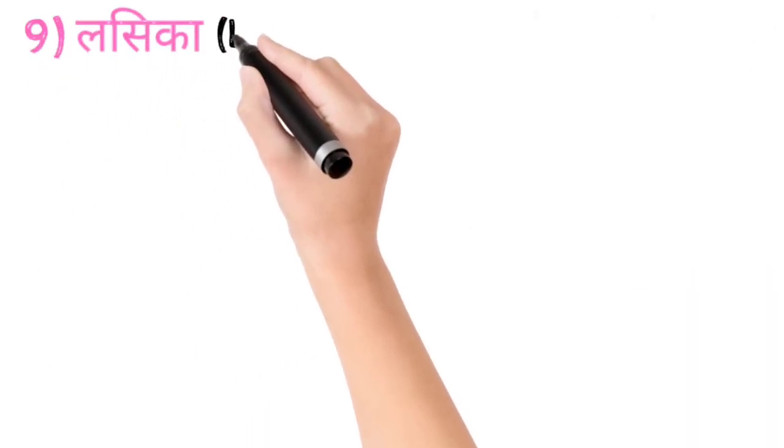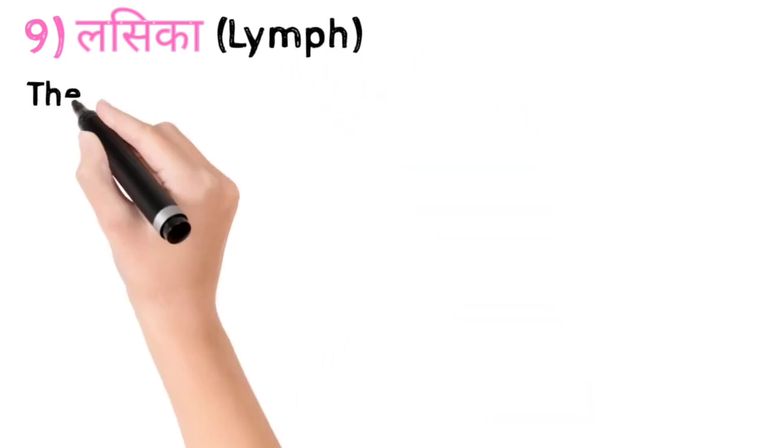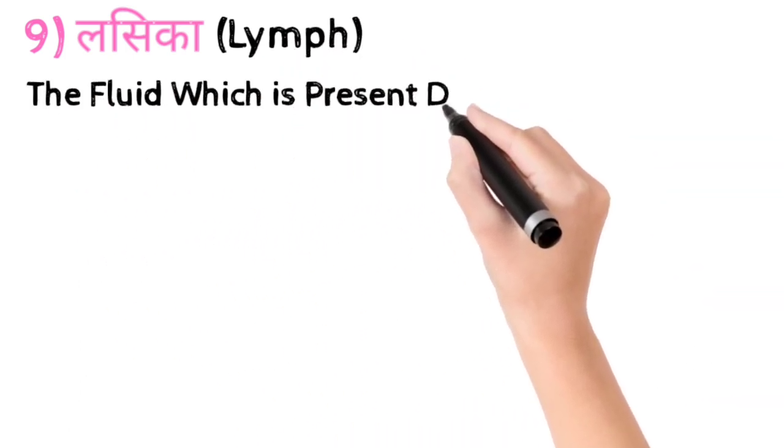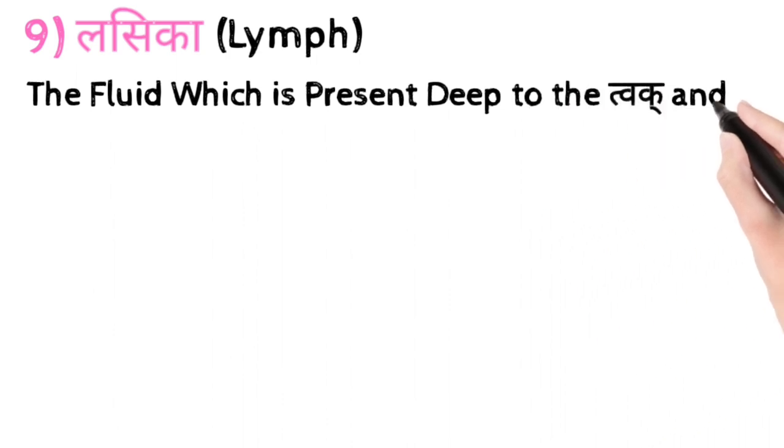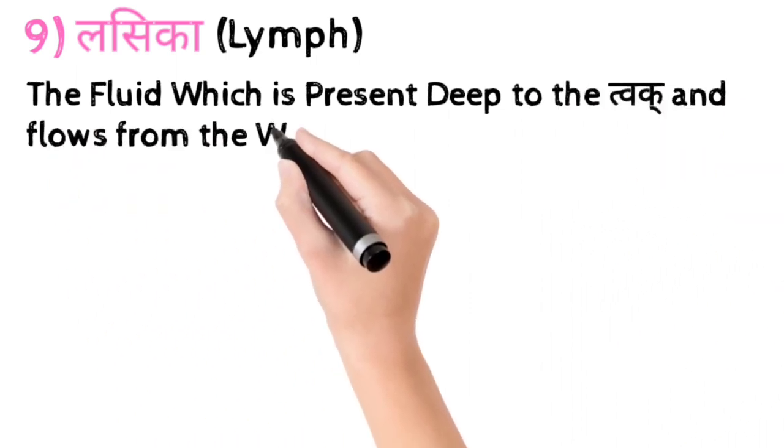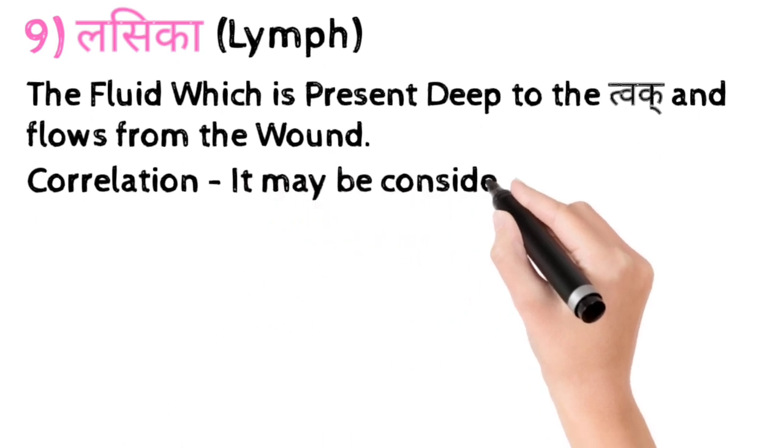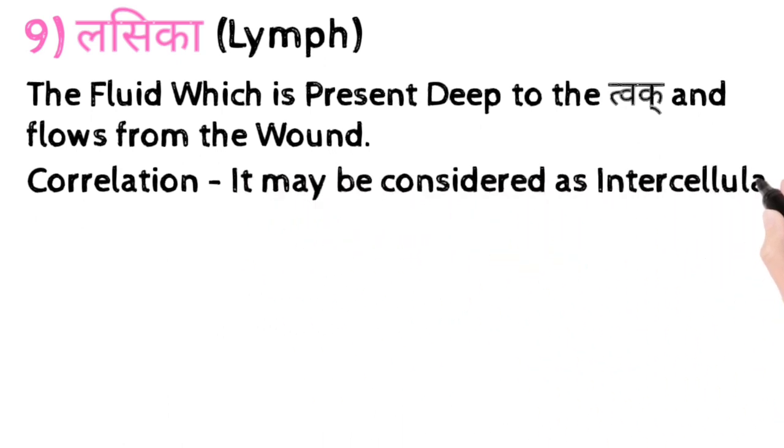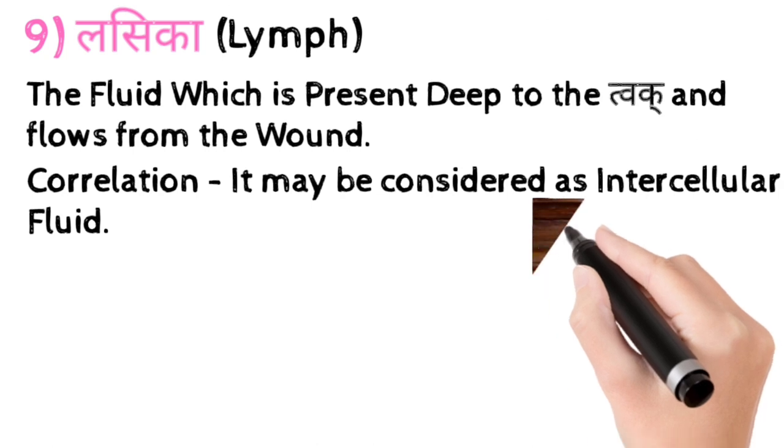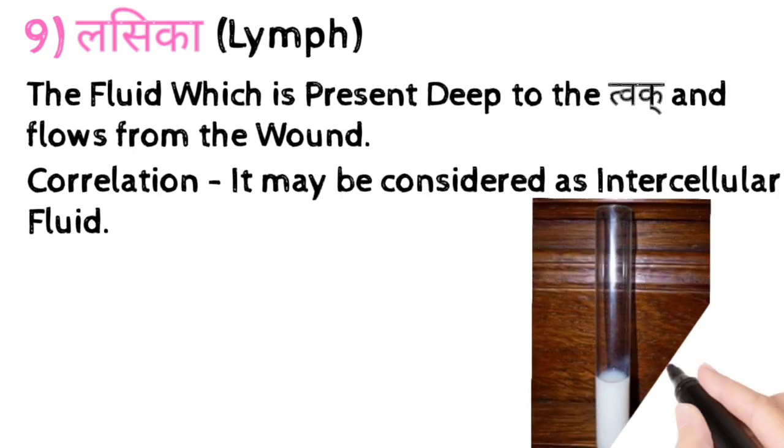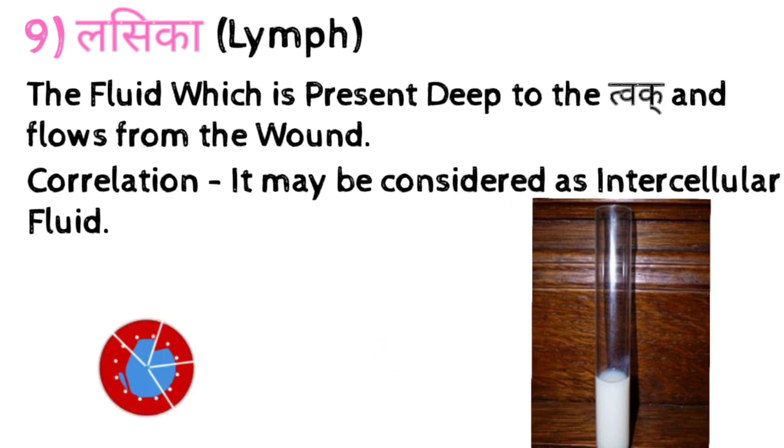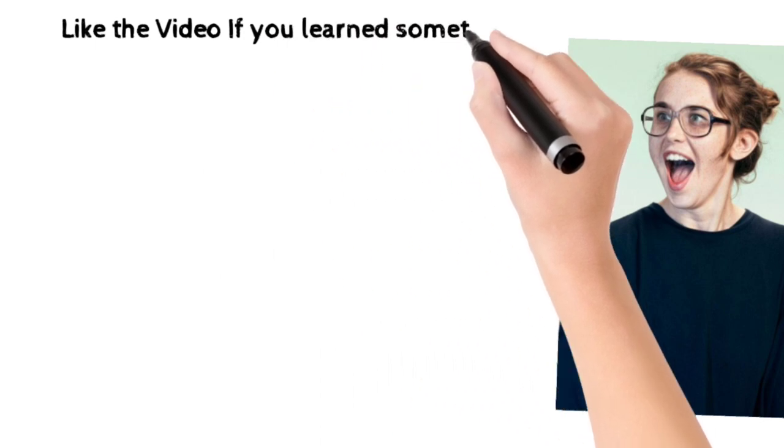Chaliye ab padhte hain Lasika ke bare mein jo ki hai lymph. The fluid which is present deep to the Twak, Twak matlab twacha, and flows from the wounds. Iska correlation hum intercellular fluid se bhi le sakte hain. Yahan main ek picture attach kar rahi hoon Lasika ki. Agar aap logon ko iske notes chahiye to aap ise pause karein aur wahan se likh lein. Itna material kaafi hai is topic ke liye. Please like do video. Isn't something.